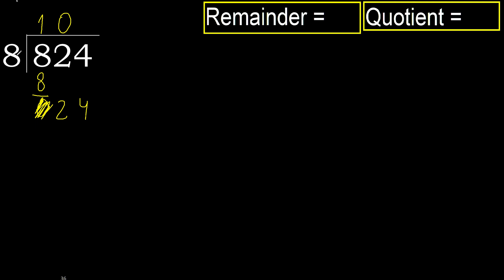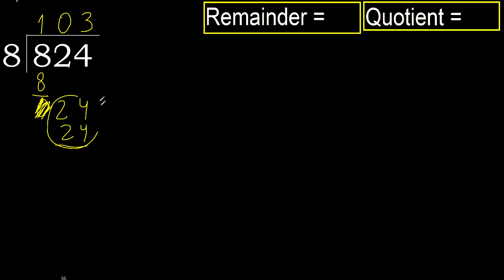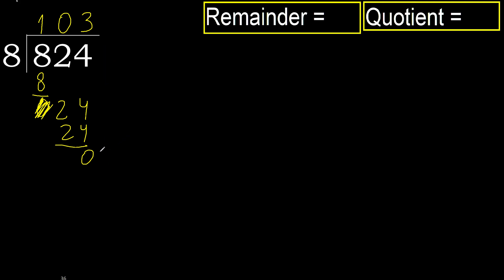24: 8 multiplied by 3 is 24, which is not greater. Subtract. The next digit — there is no number, therefore finish. 824 divided by 8 is 103.